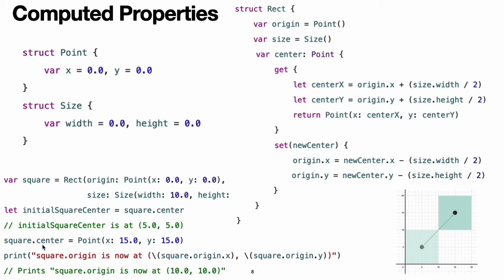The center property is then set to a new value of (15, 15), which moves the square up and to the right to the new position shown by the dark green square in the diagram. Setting the center property calls the setter for center, which modifies the x and y values of the stored origin property and moves the square to its new position.